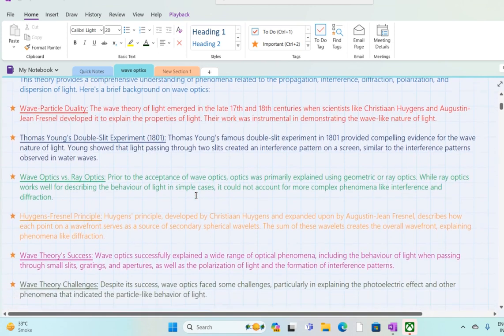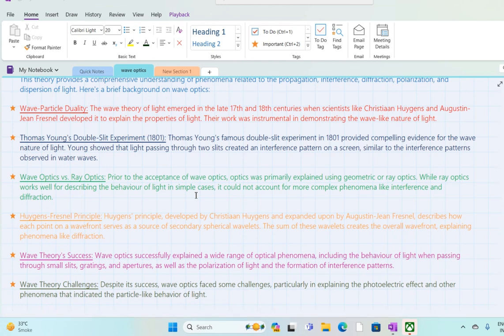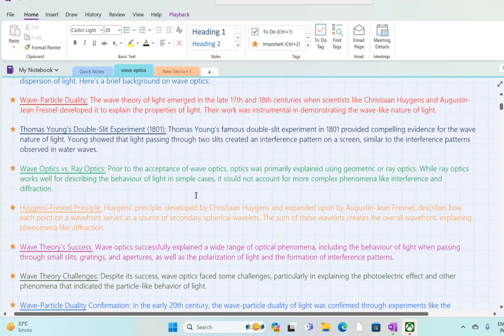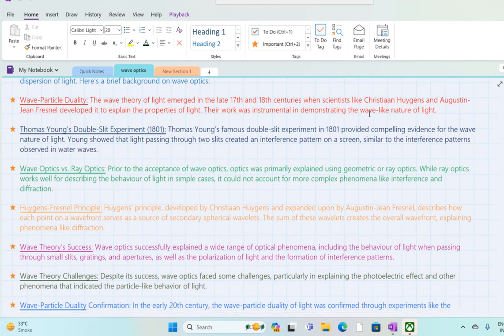Next topic which is Wave Particle Duality. Wave Particle Duality here you can see is a little bit different but I will try to explain it in a simple way. So first of all, the wave theory is written and we will discuss the background. In the late 17th and 18th centuries, when scientists like Christiaan Huygens and Augustin-Jean Fresnel developed it to explain the properties of light. Their work was instrumental in demonstrating the wave-like nature of light. This is the wave-like nature of light. What does it mean? In the 17th century...